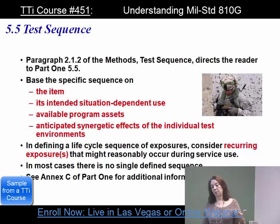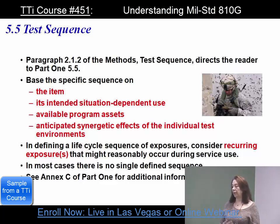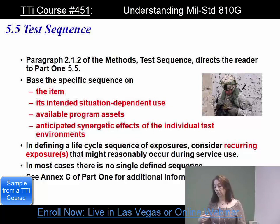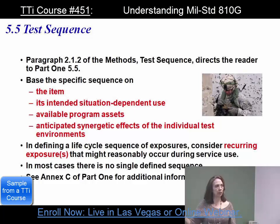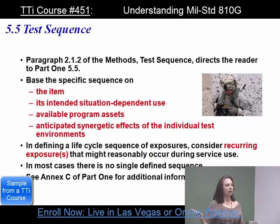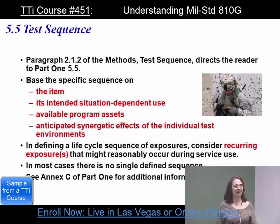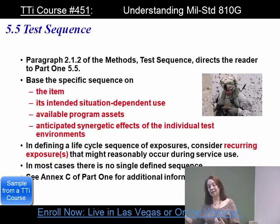Your test sequence directs readers back to part 1, paragraph 5.5, which tells us the sequence needs to be based on the item and its intended situation-dependent use. For example, he's using a touch screen with a stylus — what happens if he loses his stylus? You need to think about things like that. I would never buy something like that for a soldier because people will lose a stylus. Look at the bullet holes behind him — do you think he can run to the closest depot and get a new stylus? This is part of intended situation-dependent use.